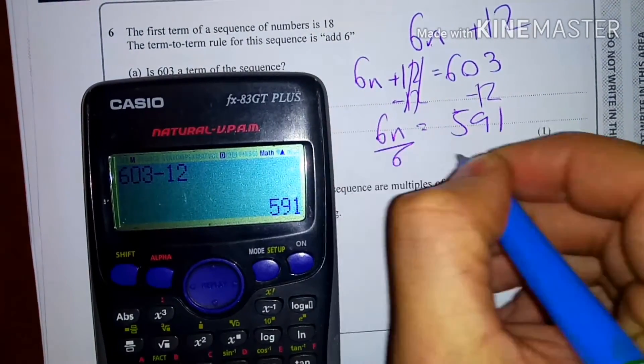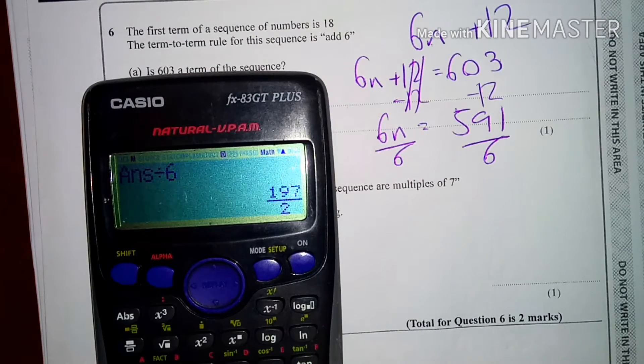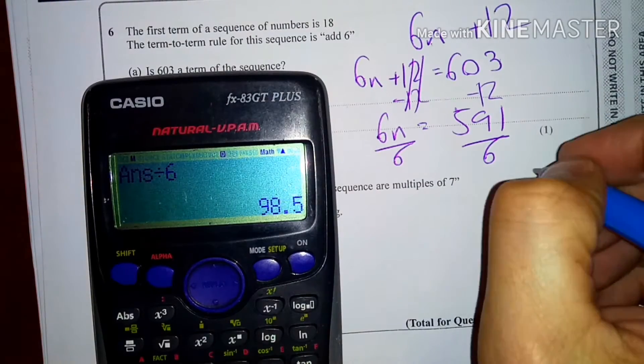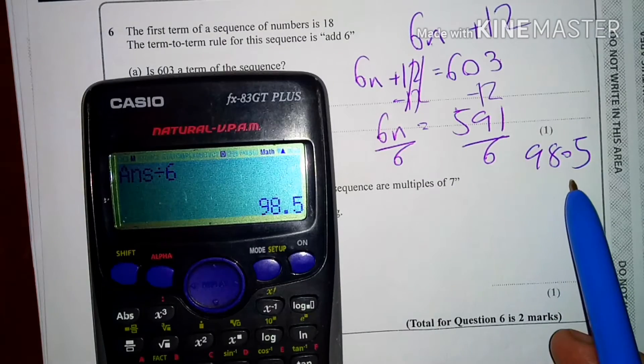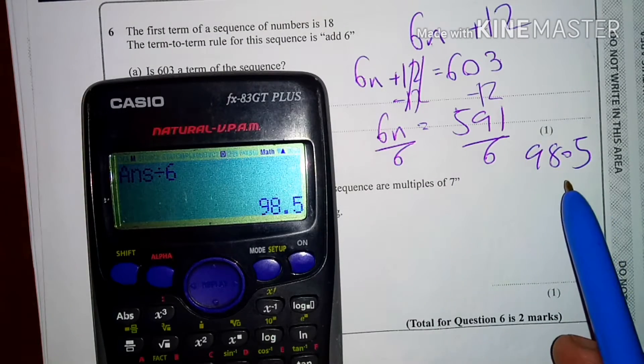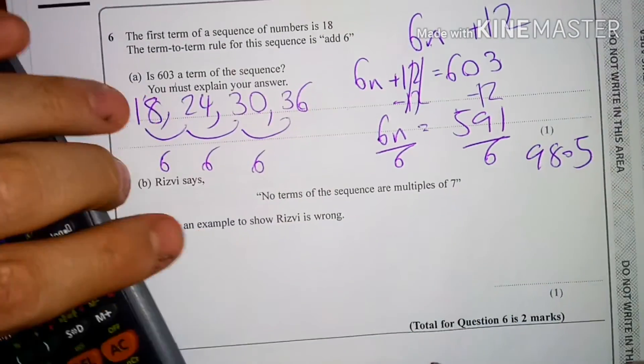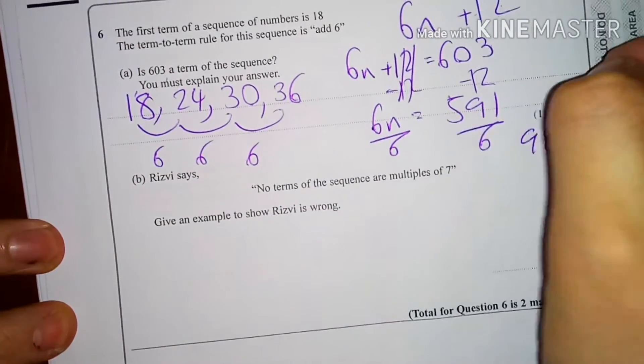And to solve it, I'll divide by 6, divide by 6. Which equals 98.5. Because that says 98.5, and that's not a whole number, we know it's not going to be in the sequence. So basically that's to say it's not in the sequence.